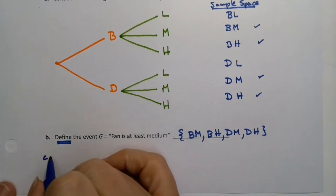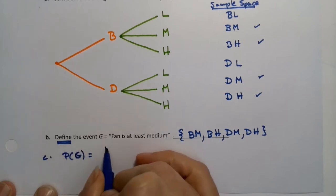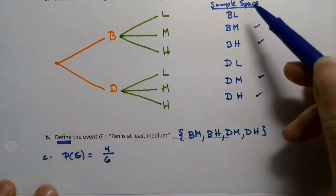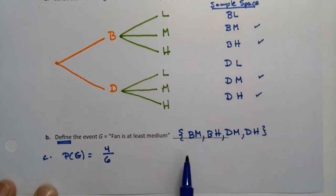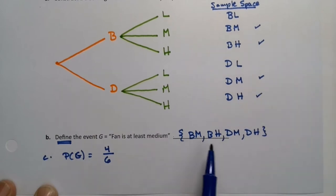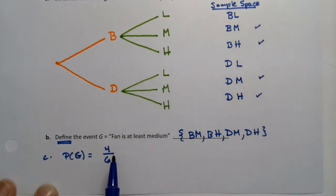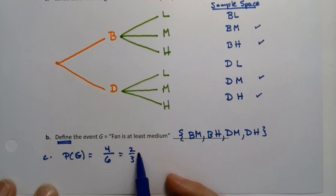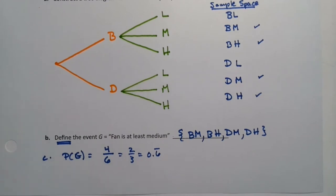Now if we want the probability of G, which would be a good question to ask, that would be 4 out of 6. There are 6 equally likely outcomes, 4 of which are in my event G. So 6 in the sample space, 4 in the event. 4 divided by 6, which would be 2 thirds. Or 0.6666. I'll actually add that in as a future question for everybody.